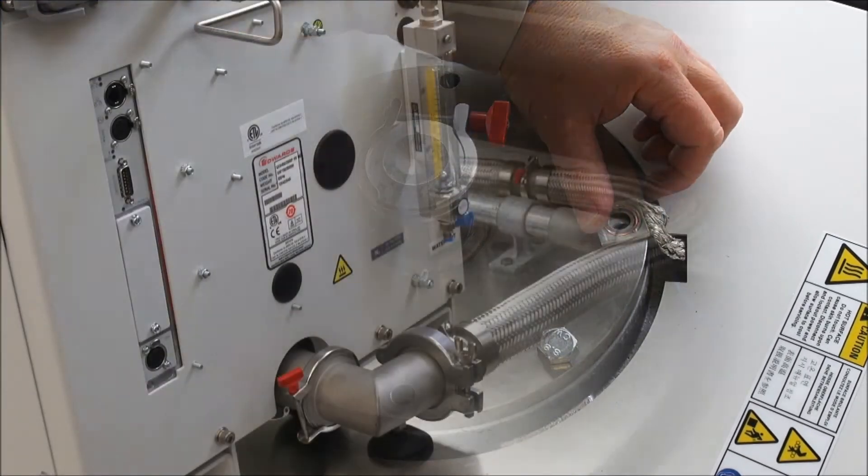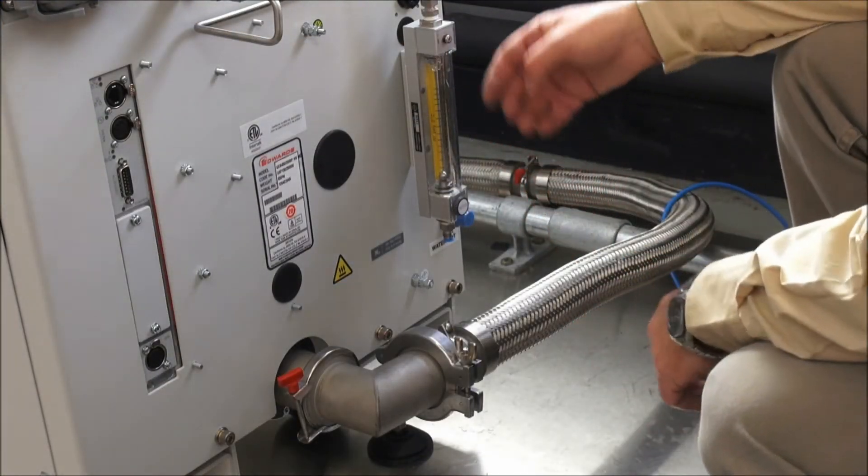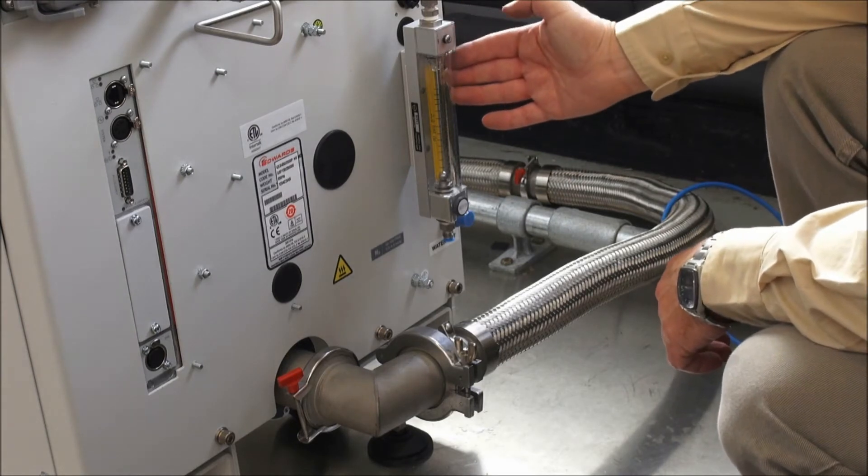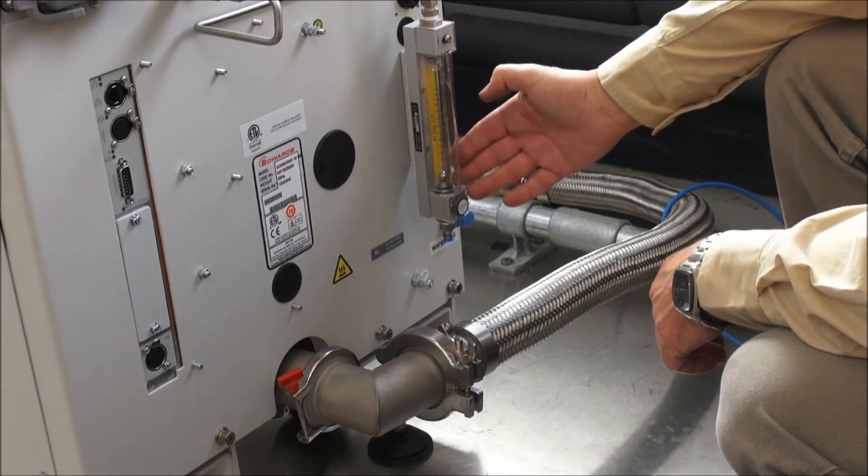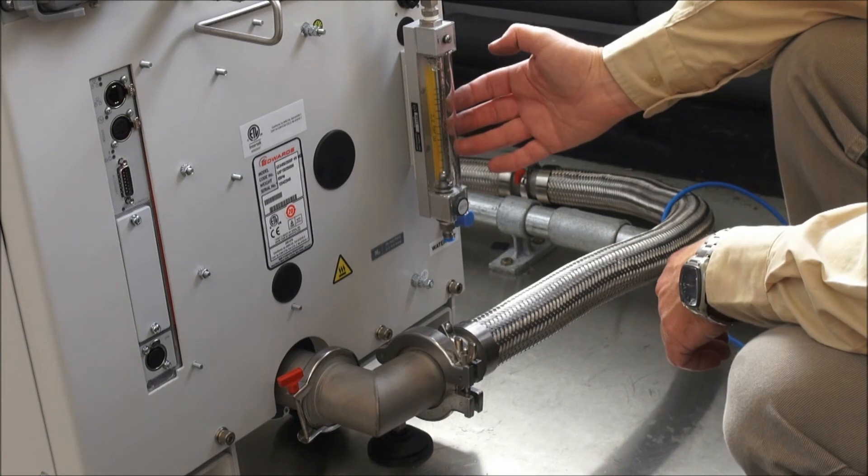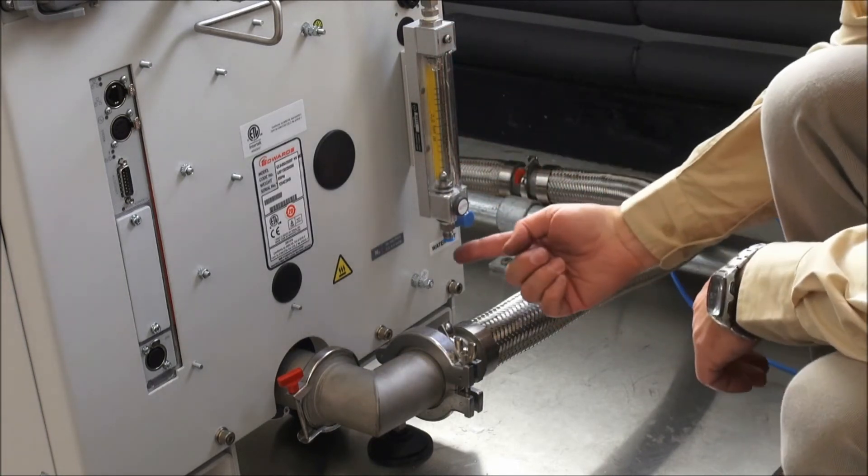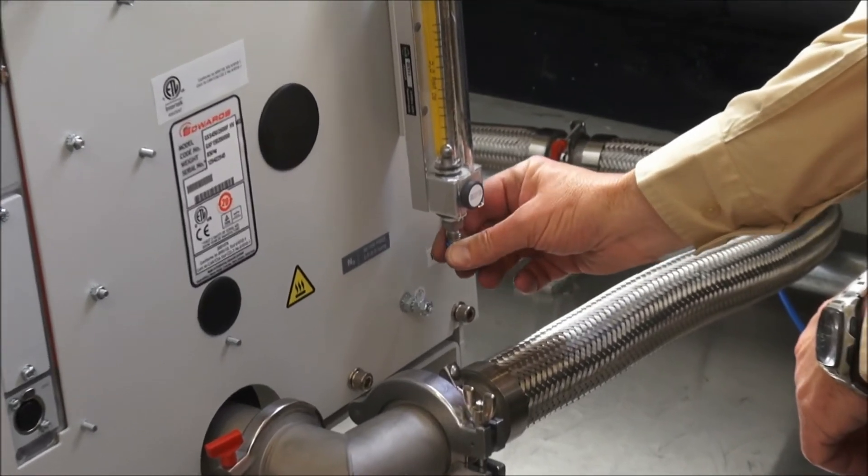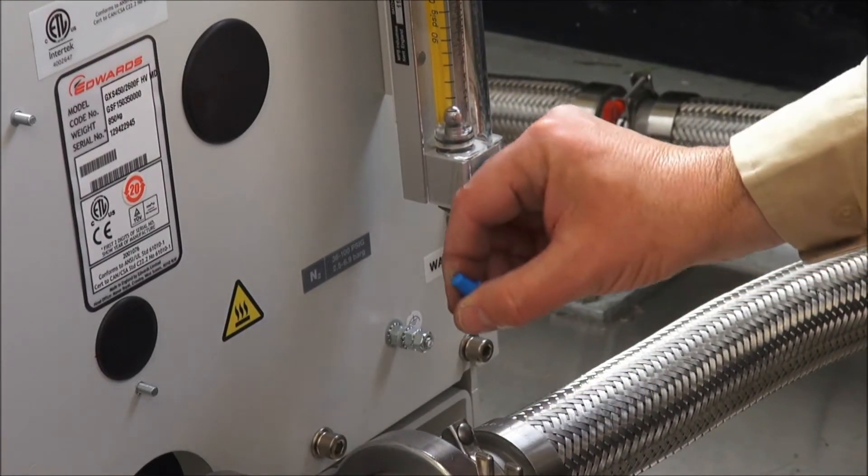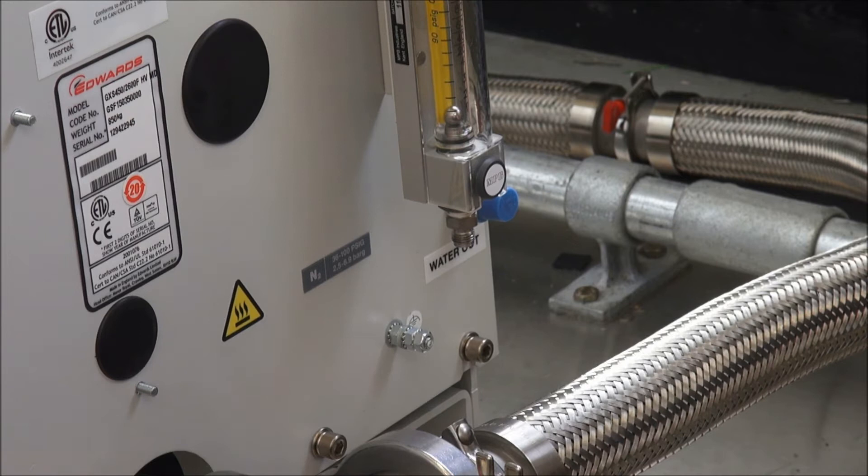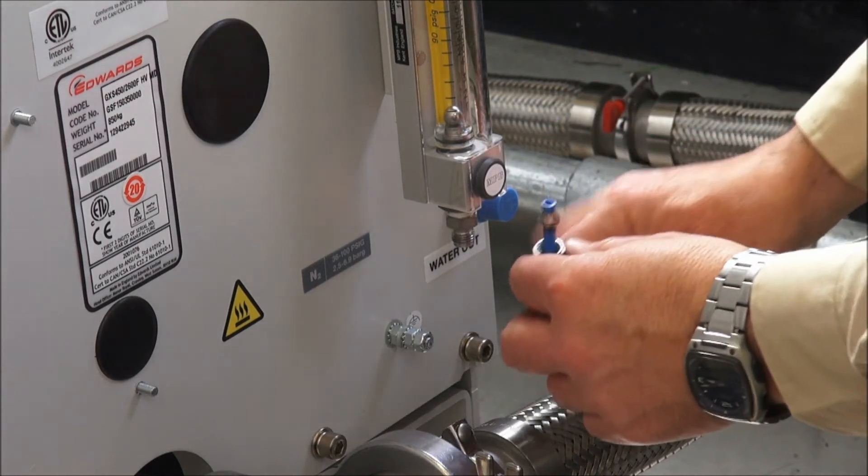The earth ground strap should be attached using one of the bolts. So now we need to connect to the utility supplies. There is a flow meter or rotameter at the rear of every GXS as all GXS pumps use purge gas in varying amounts. The connector on this rotameter is a quarter inch female swage lock.